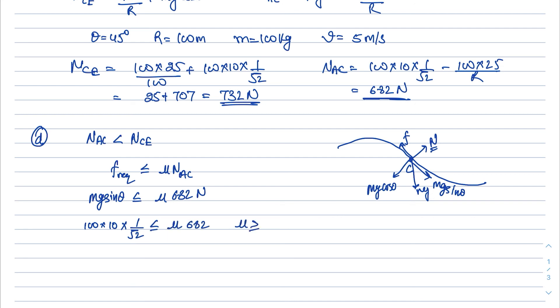So mu should be greater than equal to 707 divided by 682 that means 1.037. So this is the mu minimum which is required to safely move this cycle from this track and the value is 1.037. So this is the solution of this problem.